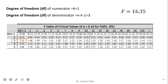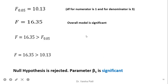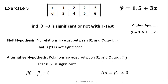With df₁ = 1 and df₂ = 3, at α = 0.10 the table value is 5.54 — our answer 16.35 exceeds this. At α = 0.05 the table value is 10.13 — 16.35 still exceeds this. At α = 0.01 the table value is 34.12 — 16.35 does not exceed this, so we settle at 95% confidence. Since 16.35 > 10.13 at α = 0.05, the overall model is significant, the null hypothesis is rejected, and parameter β₁ is significant.